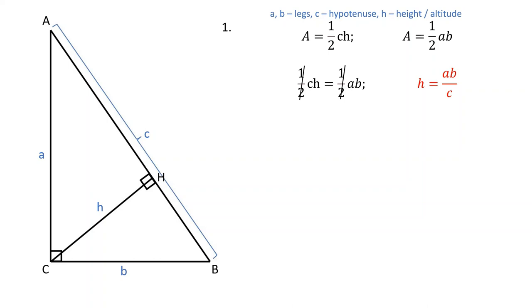This is the formula you can use to calculate the height drawn from the right angle to the hypotenuse, where A and B are the legs of a right triangle and C is the hypotenuse. Let's substitute in our original values to determine the height.